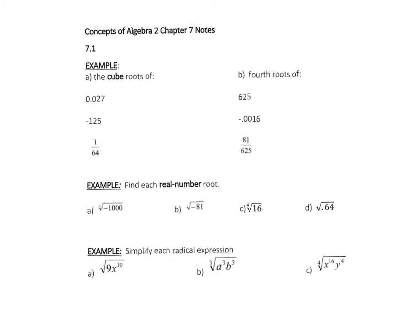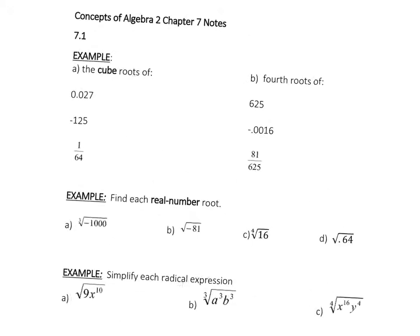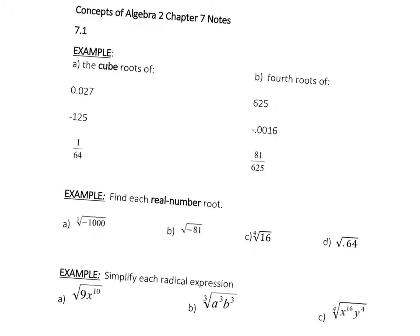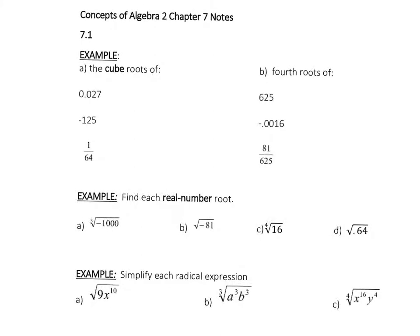So far in our math history, or the history of doing math, we've done square roots. So a square root of 25 is 5 because 5 squared equals 25.